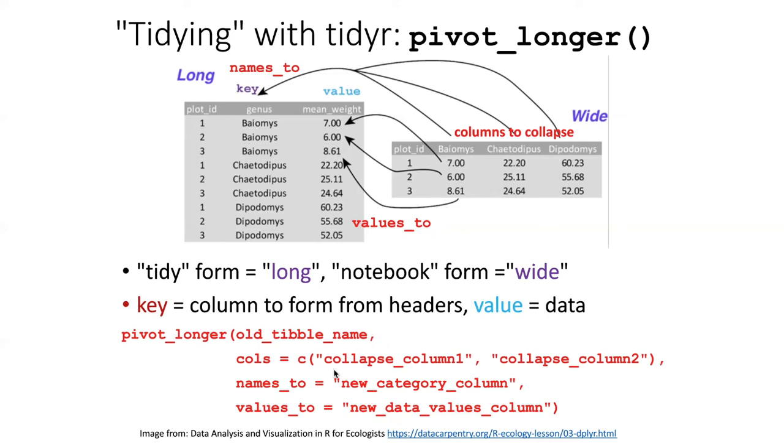And then the next argument of the function is to define what's called the names_to column, which is the new column that we're going to create that contains the names. And then the values_to argument is the one where we specify the name of the column that we're going to create that's going to hold the values, which would be this column right here.